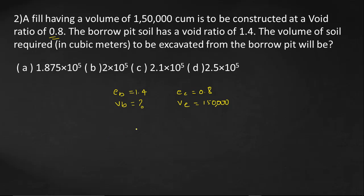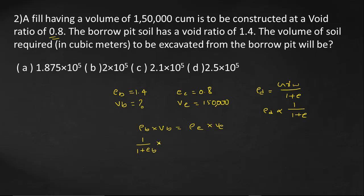Using the same relation: density of Borrow Pit × V_B = density of Embankment × V_E. We know that dry density ρ_d = G·γ_w / (1 + E), so ρ_d is inversely proportional to (1 + E). Therefore we can write: V_B / (1 + E_b) = V_E / (1 + E), which gives V_B = [(1 + E_b) / (1 + E)] × V_E.